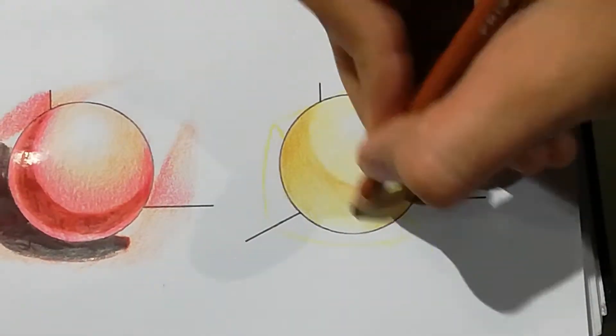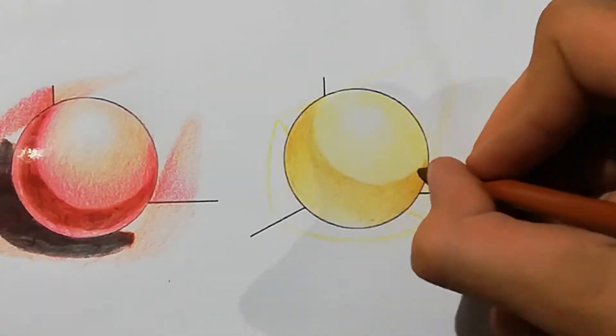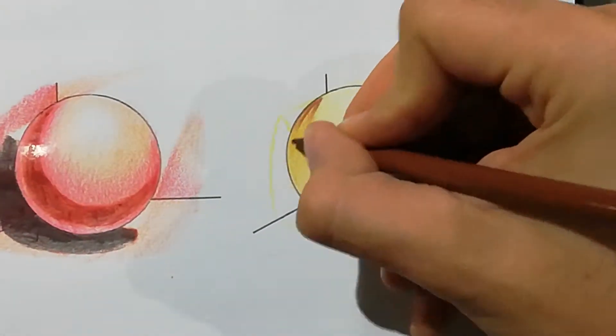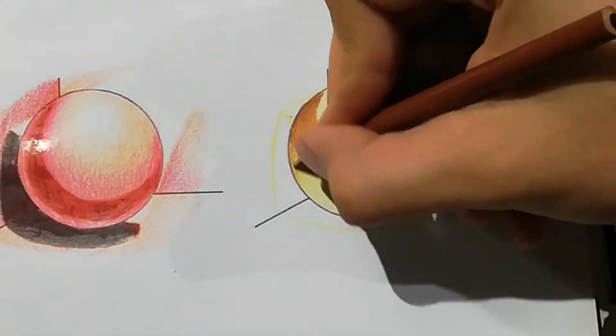As we add color in circular ways, we're going to change the directions of the strokes. Now we add the cast shadow over here, the shadow we see projected on the wall.